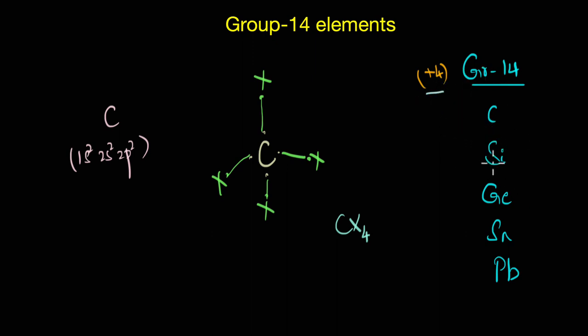So we can conclude that in the tetravalent state the group 14 compounds are not electron deficient or electron rich, but they are electron precise compounds, that is they have precisely eight electrons around the central atom.